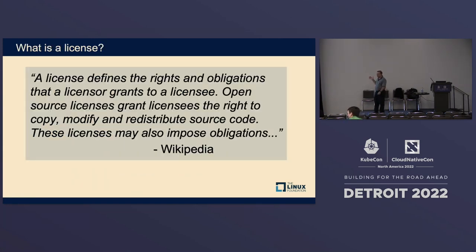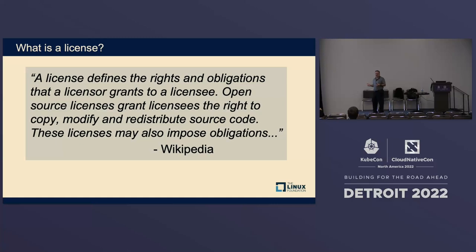A license defines rights and obligations that a licensor grants to a licensee. It means that the person who writes the code — the author — gets to choose what license it's under. If they don't choose anything, it's not open source. You can still put the code up on the internet, but if you don't specify a license, it doesn't give anybody any rights to use it in any particular way.